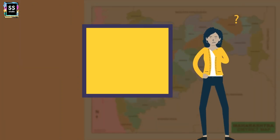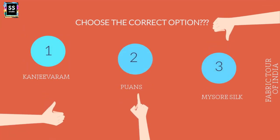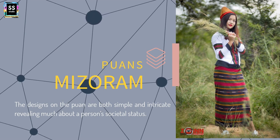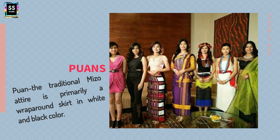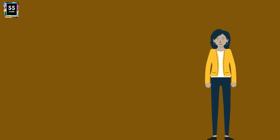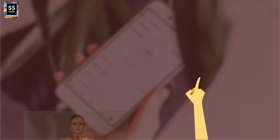State 8 on our list: Which is the famous textile of Mizoram? These are some of the states whose famous textiles you may not know, which is why I have included them. The options are: Kanjivaram, Puans, or Mysore Silk. It is Puans from Mizoram. The design on Puans is both simple and intricate, revealing much about a person's societal status. Puans are traditional Mizo attire — primarily a wraparound skirt in white and black, now available in most colors.